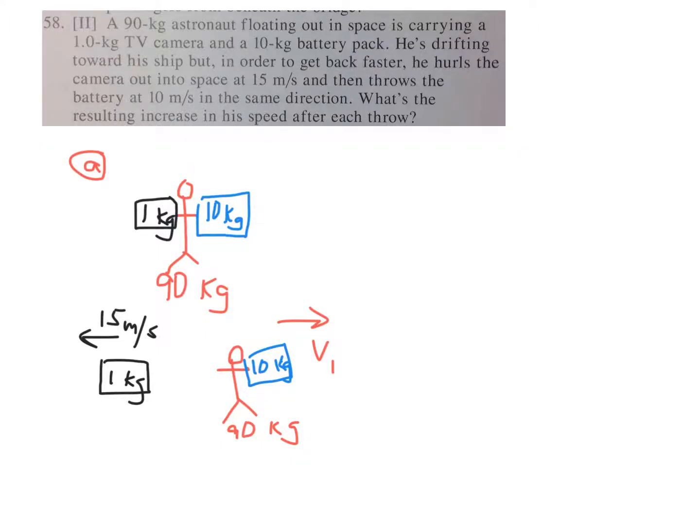Day six AP Physics homework number 58, page 120, conservation of momentum. We have this astronaut with equipment, camera and a backpack. He throws the camera which has a mass of 1 kilogram backwards at 15 meters per second.